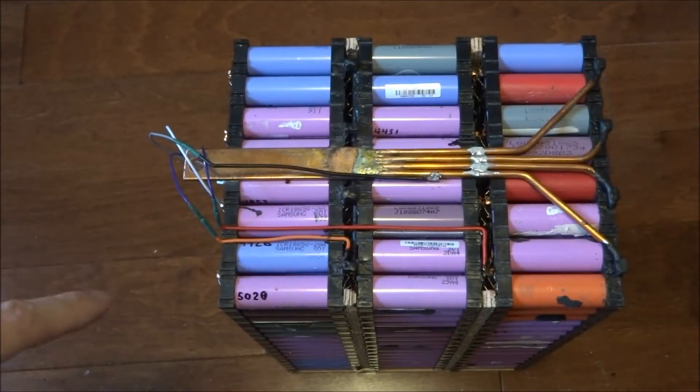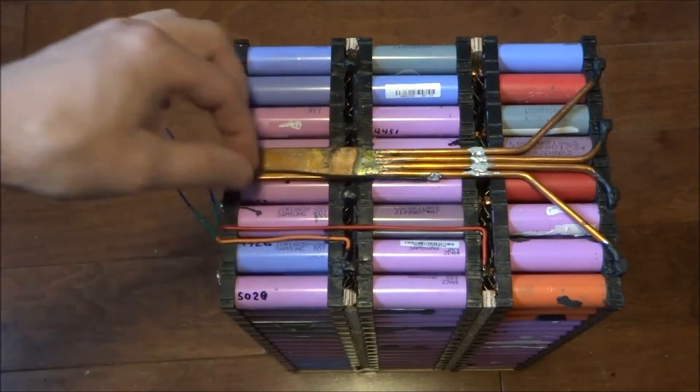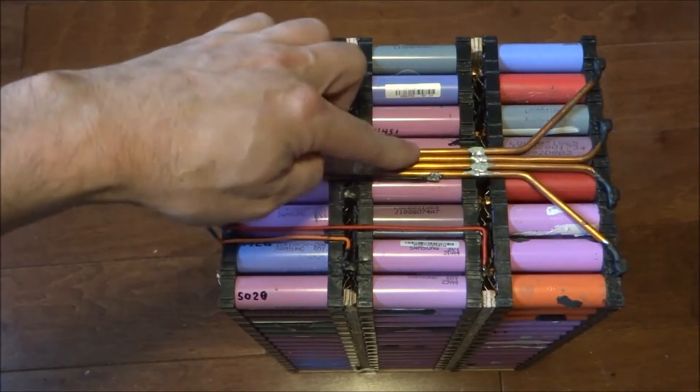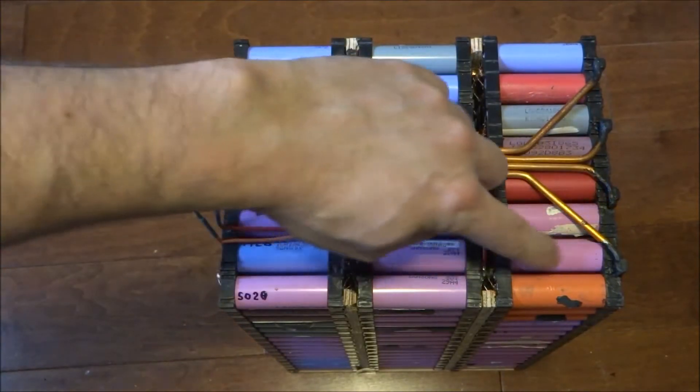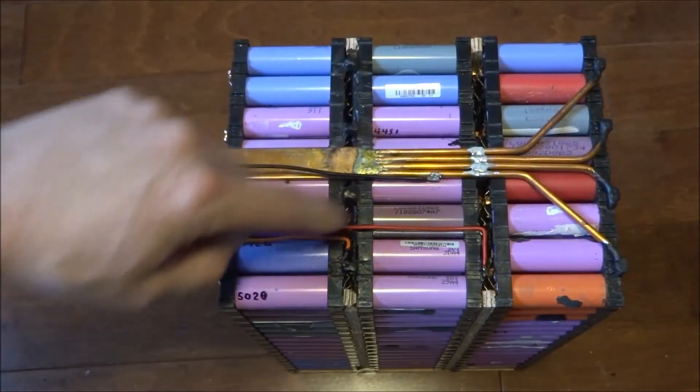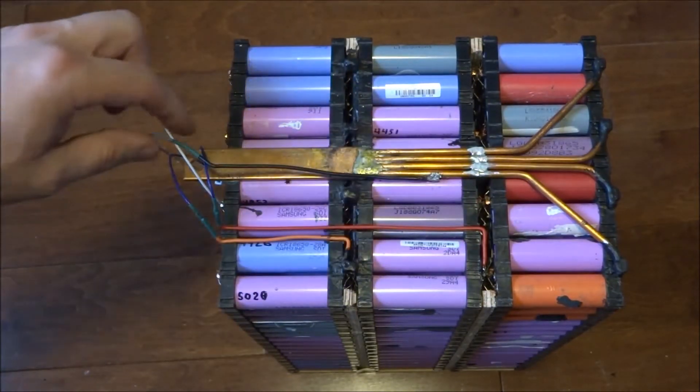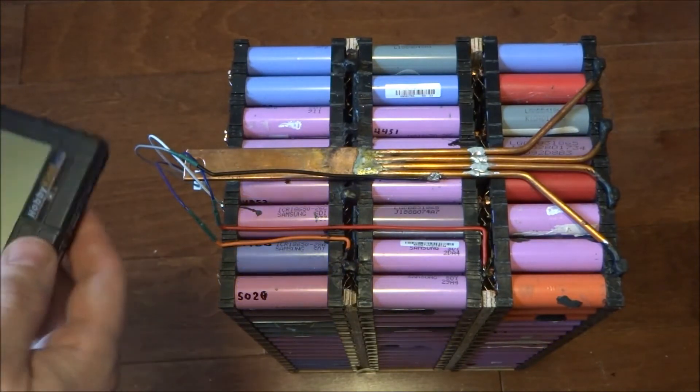I've now put in some balance wires. The black lead goes to the negative, the red one goes to the intermediary between the first and second group, orange between the second and third, and the white up here goes to the positive on this side.